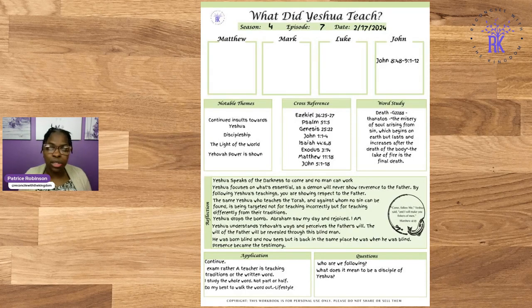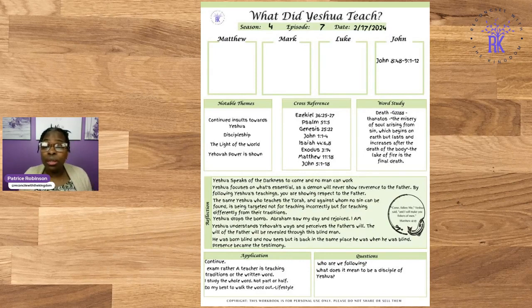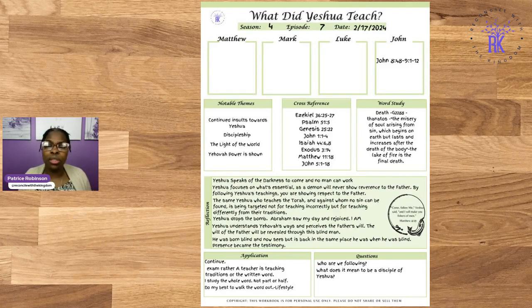Yeshua understands Jehovah's ways and perceives the will of the Father, and the will of the Father will be revealed through this blind man. Yeshua knew and understood this. This is why he said this was not caused by any sin.